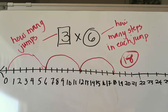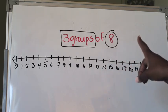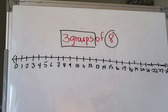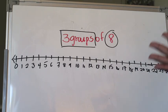Here is the second example. The first thing to notice is that it is presented in a different way — instead of two factors with a multiplication sign, you have the statement that we are creating three groups of eight. That can also be thought of as three equal groups with eight in each group, or three times eight. If you're presented with a problem that looks like this, you tell yourself: I need to make three jumps on the number line, and in each jump I need to take eight steps.